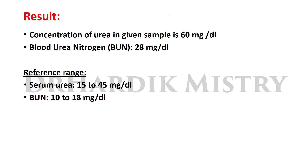The concentration of urea in the given sample is 60 mg per dL, and blood urea nitrogen is 28 mg per dL. Reference ranges: blood urea 15–45 mg per dL; blood urea nitrogen 10–18 mg per dL.